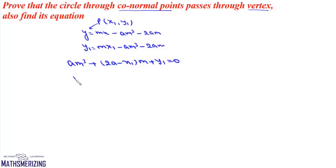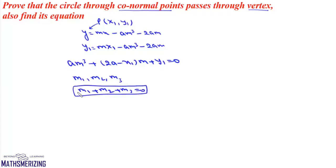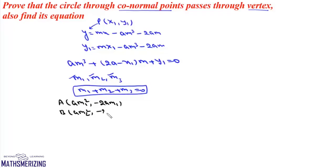Since three normals can be drawn, this cubic equation has three roots m1, m2, and m3, and we know that m1 + m2 + m3 = 0. If the slopes of the normals are m1, m2, and m3, then the feet of the normals are A = (am1², −2am1), B = (am2², −2am2), and C = (am3², −2am3). We need to find the equation of a circle passing through these three conormal points.